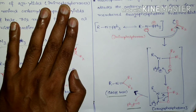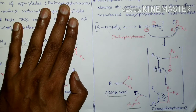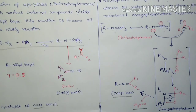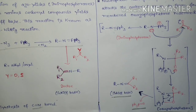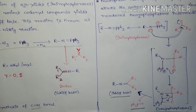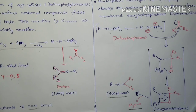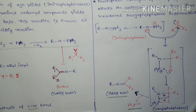So this is the mechanism of the Aza-Wittig reaction. From one combined reaction sequence, we have learned two named reactions — the Staudinger reaction and the Aza-Wittig reaction. Thank you.